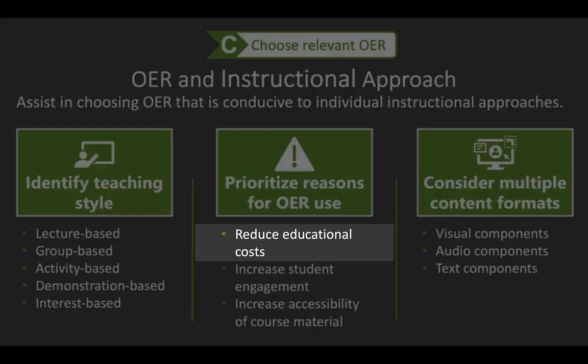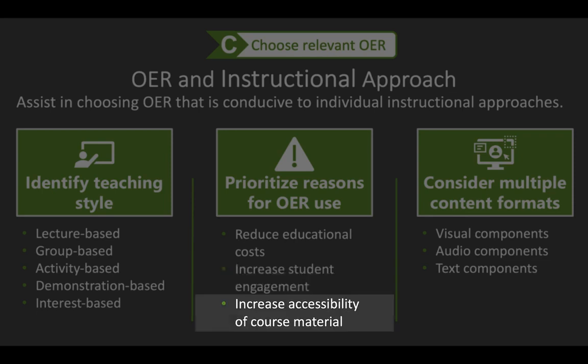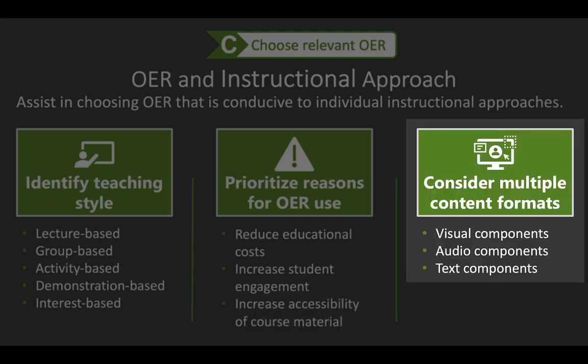Lowering textbook cost as a priority points to choosing OER that can replace it. If the text is not expensive, then maybe the focus shifts to selecting OER that increases student engagement and interaction. And if existing content is not accessible, choosing OER to make it so is the most relevant choice, especially when OER offer content in various formats. Making sure OER selections contribute to varying formats of content representation is more inclusive for students and may lead to a more engaging learning experience, as they can offer variation in how information is presented, represent different learning preferences, and may also be more accessible for some students.